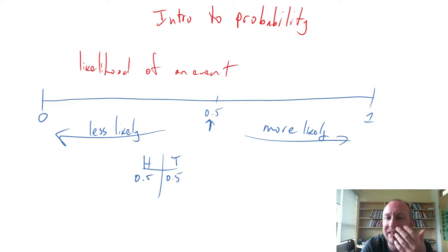We're sitting at 0.5, right here. There's an equal chance of getting heads as there is not getting heads, which means, of course, flipping tails.